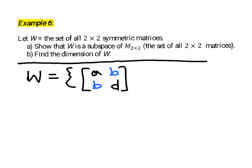So the important thing for this matrix to be symmetric is that these entries match across the main diagonal. We could describe W another way as the set of all matrices of this form, where A, B, and D are just any real numbers, so they're elements of the set of all real numbers.